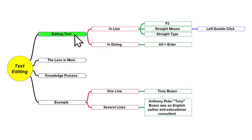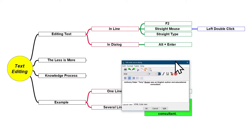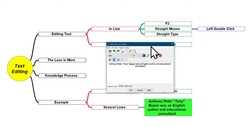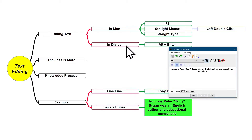In order to edit text in Dialog on Freeplane, just select the node you want to edit and press the shortcut Alt-Enter. I'm going to select this node and press Alt-Enter, and as you can see, this dialog box will be displayed so you can edit the text in Dialog.